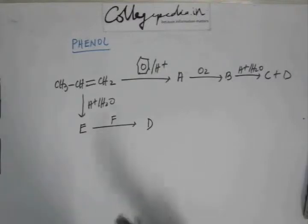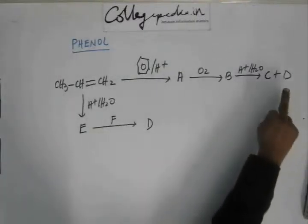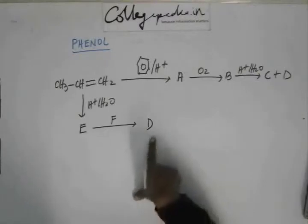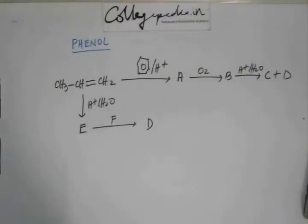Okay, so first of all, you have to go in this pathway. You get D from here and then that D is same as this D and then you'll figure out what F should be. F is a reagent.